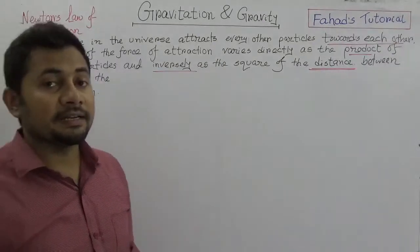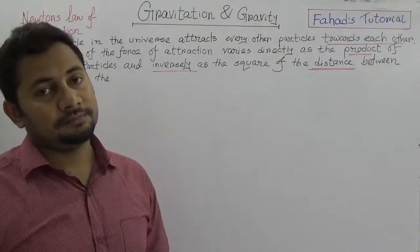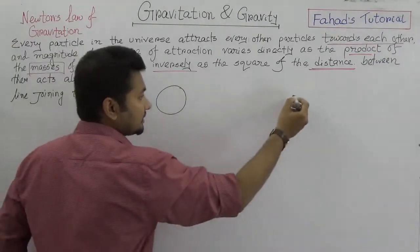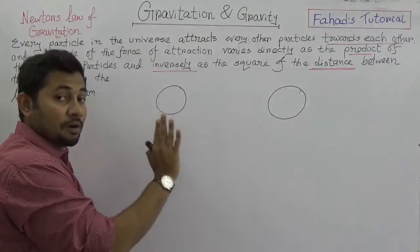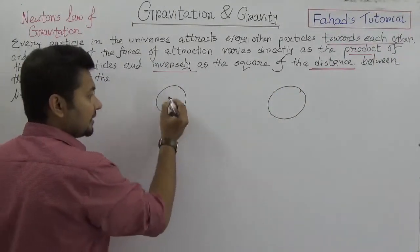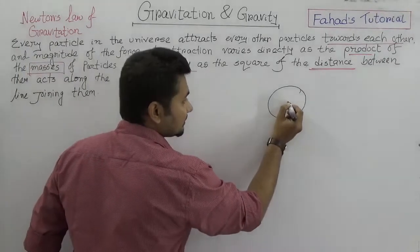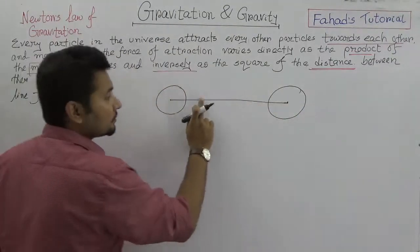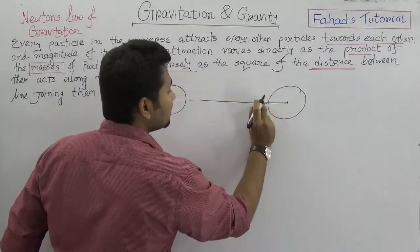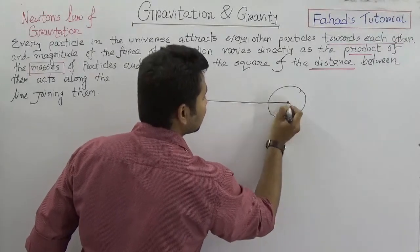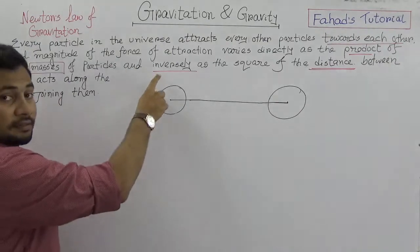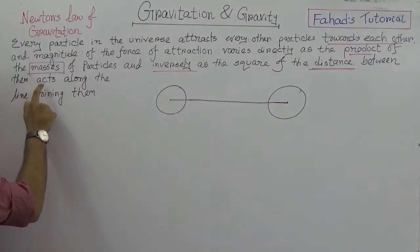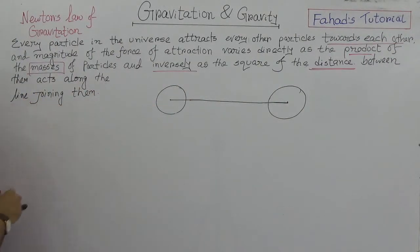And inversely as the square of the distance. We have to understand the inner meaning of this law. If we think that there is one object and another object, these two objects will attract each other. If we say this is the center of mass and this is the center of mass, and if we draw a line, we will have a joining line. This joining line would be their attraction line. This is inversely as the square of the distance between them, which will act along the line joining them.